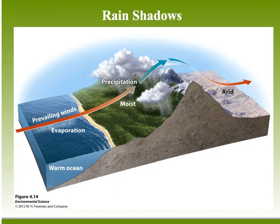Welcome back. This is AP Environmental Science Chapter 4. Today we're going to talk about rain shadows and then we'll discuss a couple different biomes in this video.